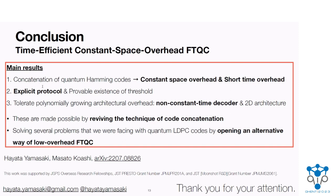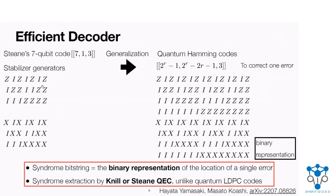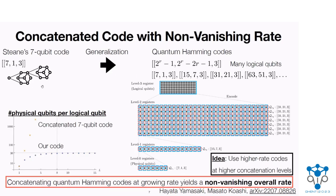Thanks for a really cool result. If I understood correctly, you achieve these results by concatenating codes from a certain family — these quantum Hamming codes. Are there other code families that this could be done with, and if so, what are the essential features of a code family to make this possible? The essential feature is that the encoding rate approaches one. If you have such a family, you can potentially construct a concatenated code with non-vanishing rate, provided the speed of approaching rate one is sufficiently fast. But our crucial contribution is to construct an explicit overall protocol and perform the full runtime analysis. We can do this for quantum Hamming codes, and our work is more than just constructing codes — this is non-trivial.